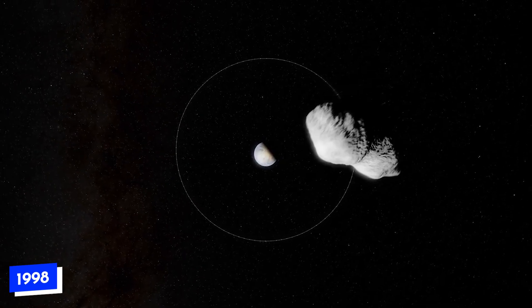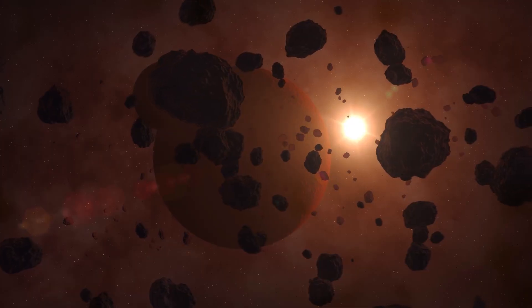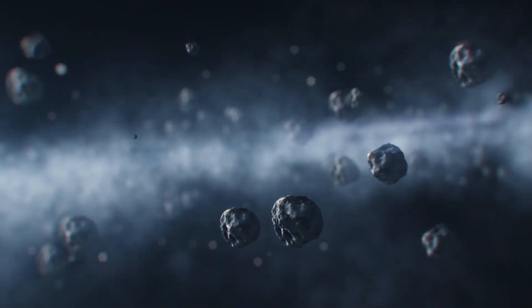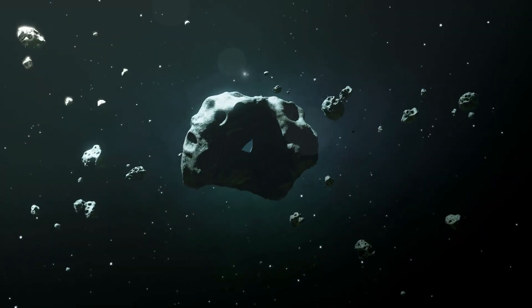In 1998, NASA spotted asteroids at least half a mile across. They found over 850 of the most dangerous ones. Scientists predict that they were able to find 90% of them, but the remaining 10% are still unknown to us.